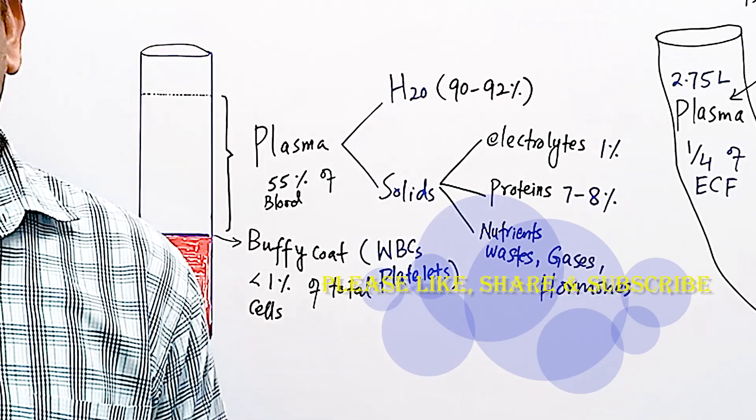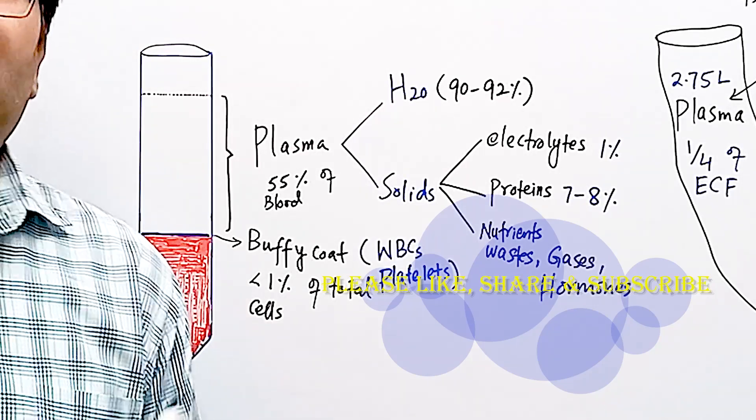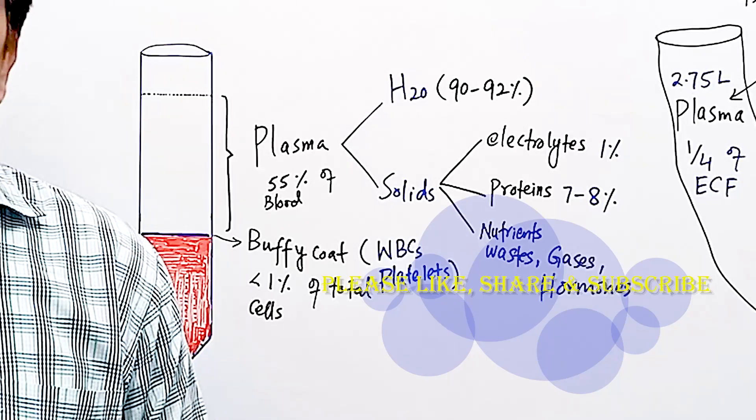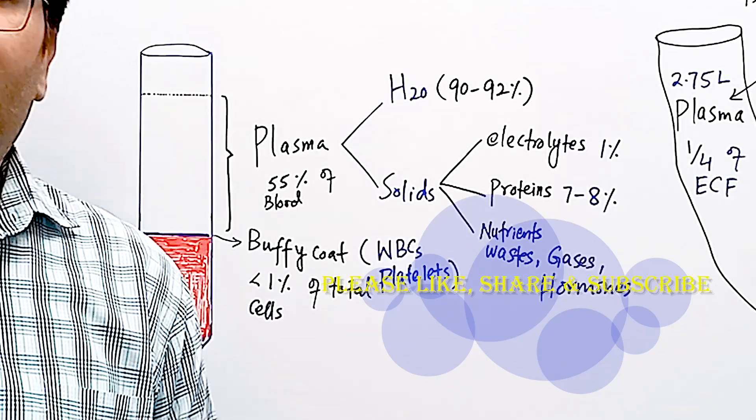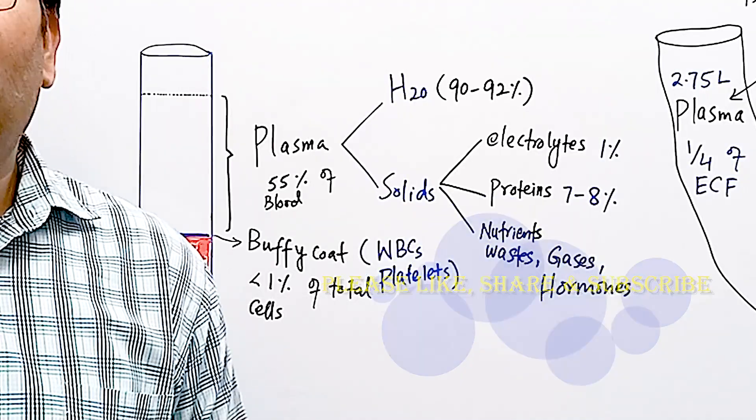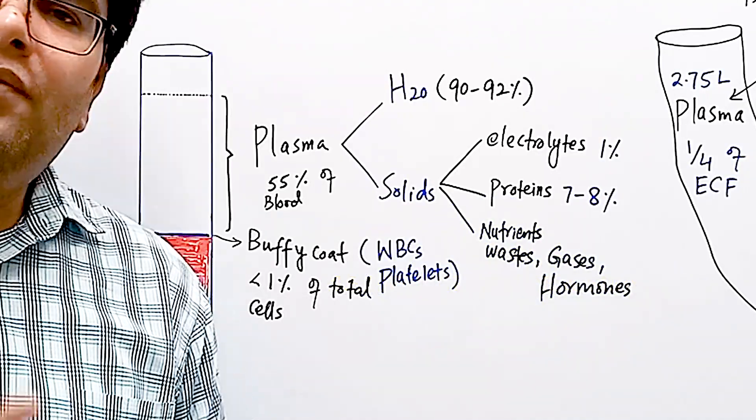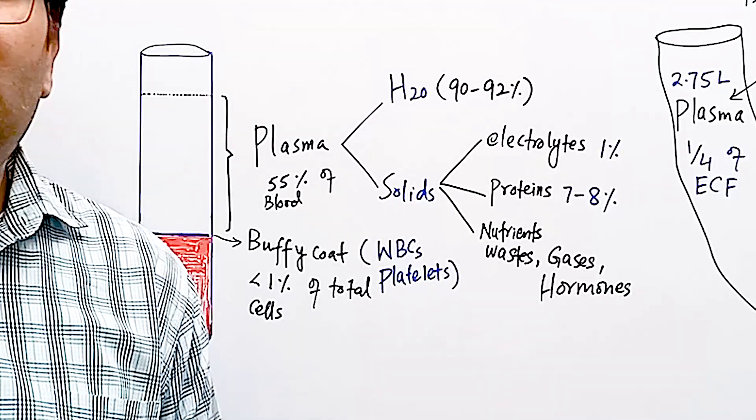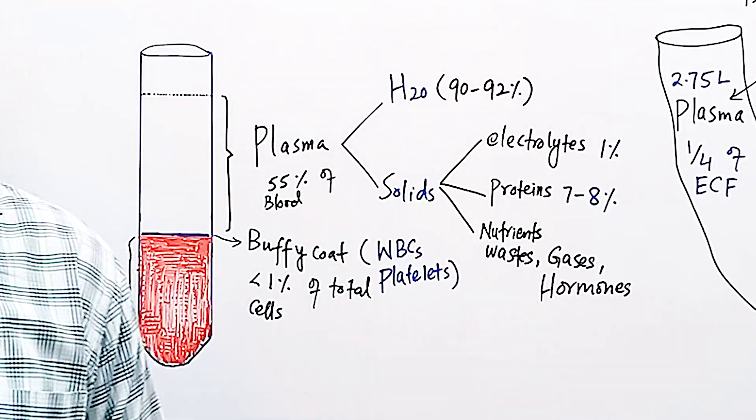You may be asked what is serum and what is the difference between serum and plasma. Serum is that straw colored fluid which oozes out from blood clot. Serum equals plasma minus plasma proteins. When we remove plasma proteins from plasma, what's left is called serum.